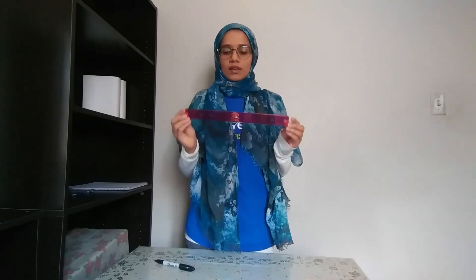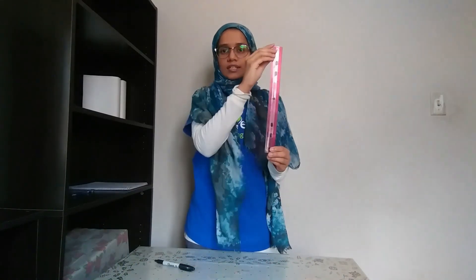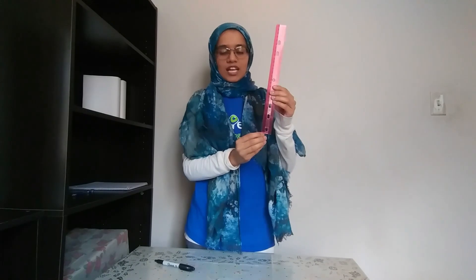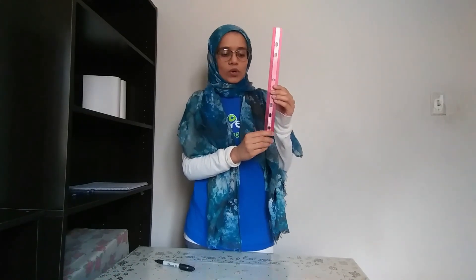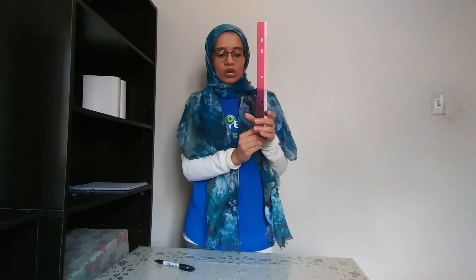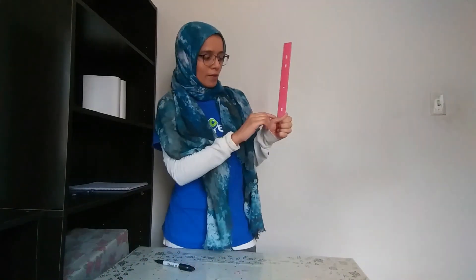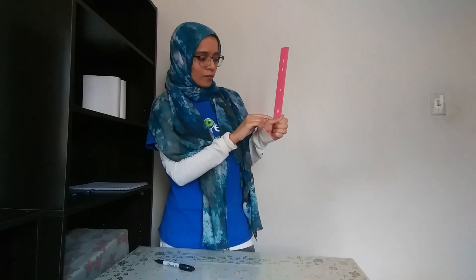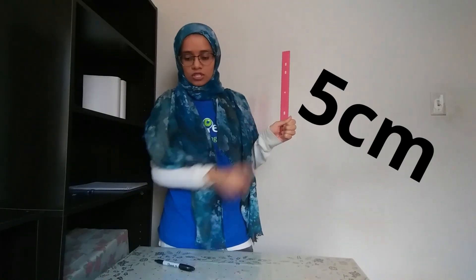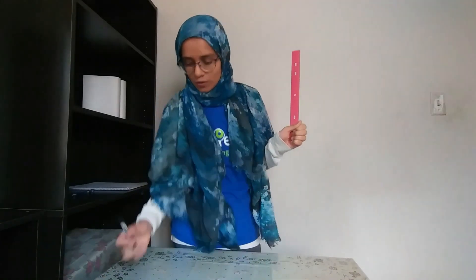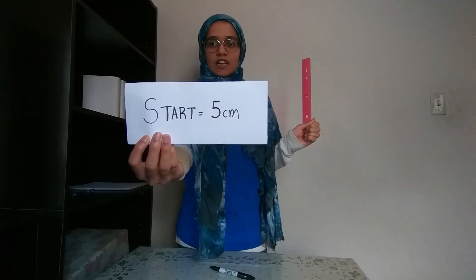So to begin, we're going to take our 30 centimeter ruler and hold it vertically. We're going to make sure that the zero centimeter mark is closer towards the ground. Then we're going to take our hand and hold it in a fist around the bottom of the ruler, and read the measurement that's at the top of our thumb. So for me, that's five centimeters, so I'm going to write that down — I'm starting off at five centimeters.